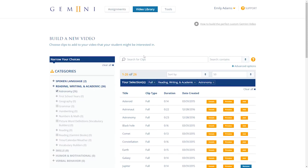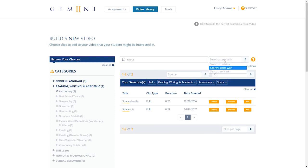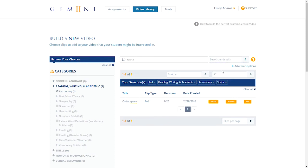We are constantly adding to our library, so check back often to see what's new. With the search bar, you can find specific videos in any category. Try switching from Contains to Starts With or Ends With. If you can't find what you're looking for, try clearing your selections.